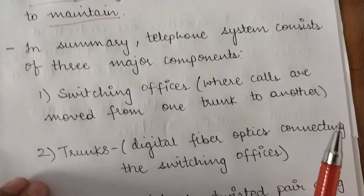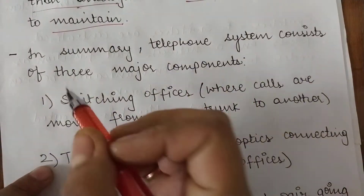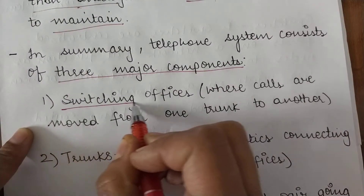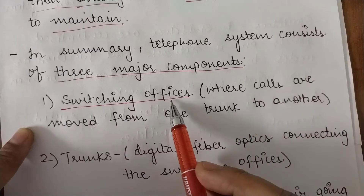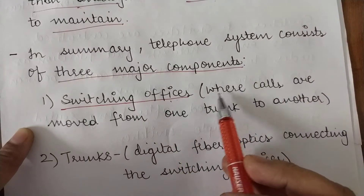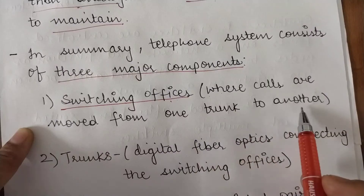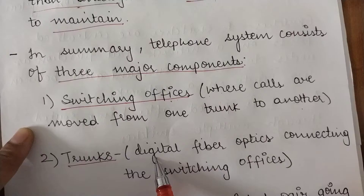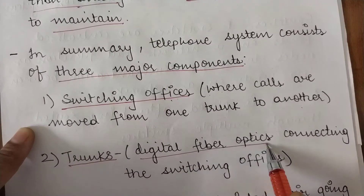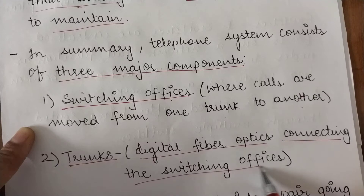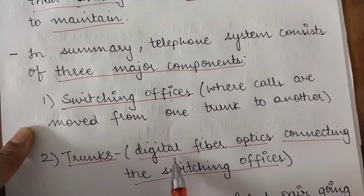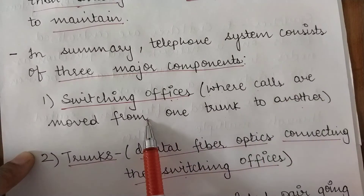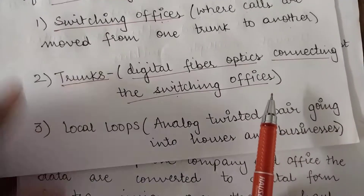If we summarize, the telephone system basically consists of three major components. The first is switching offices — the actual place where calls are moved from one trunk to another. The second is trunks, which nowadays are digital fiber optics connecting the switching offices. Trunks connect switching offices, and switching offices move your calls from one trunk to another.